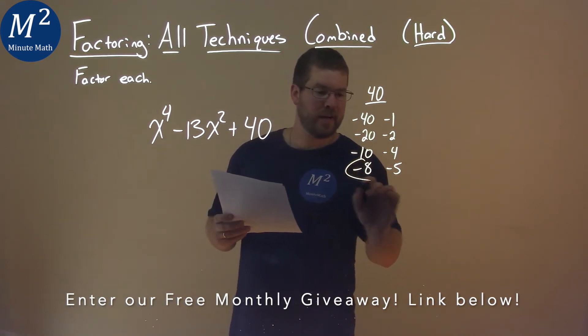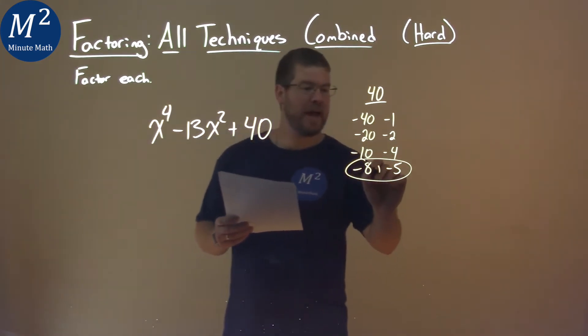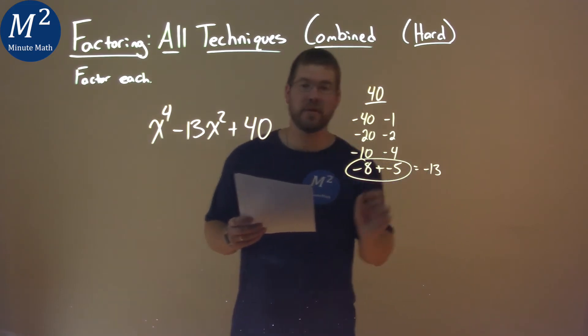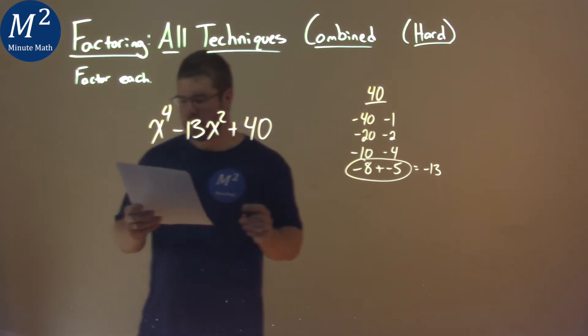Right here: negative 8 and negative 5. They add together to be negative 13. So these are the two numbers we're dealing with.